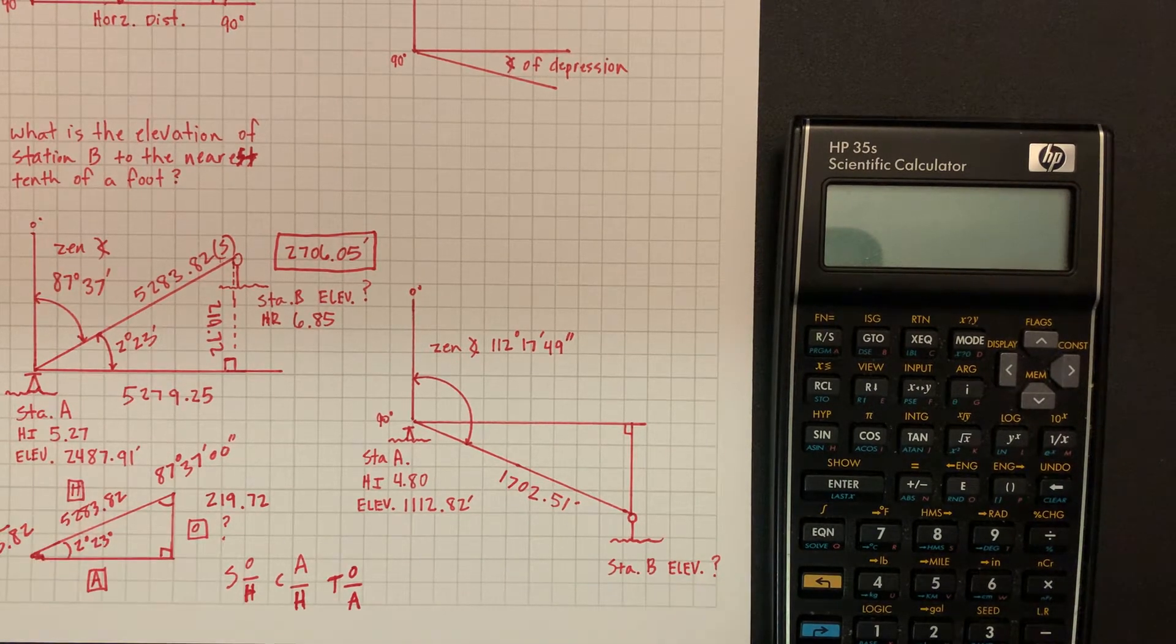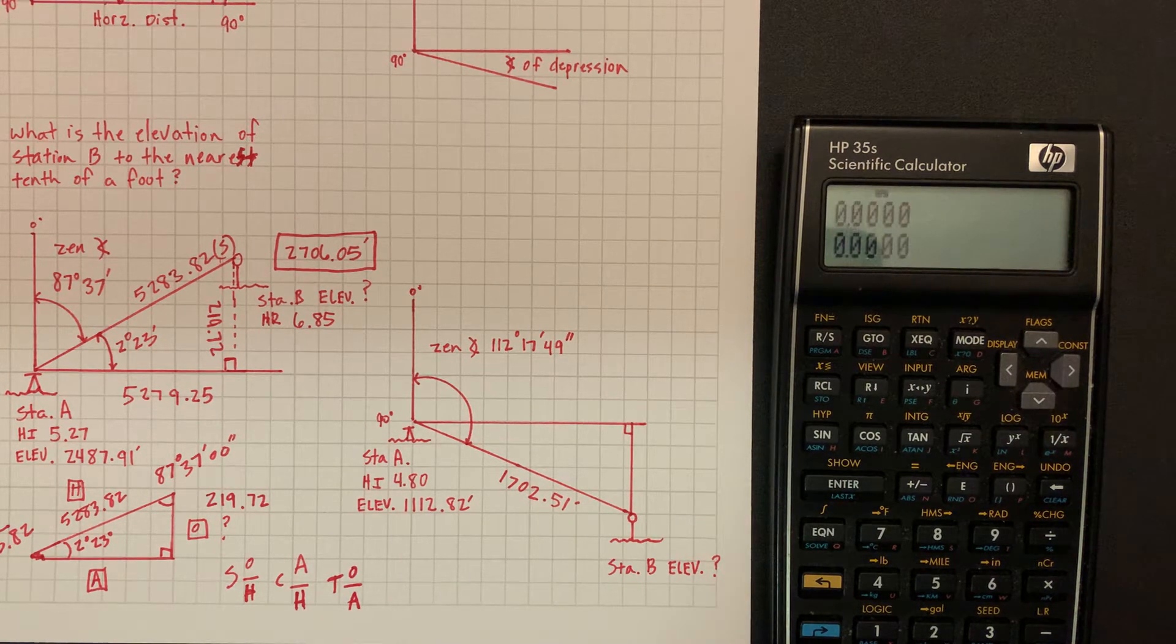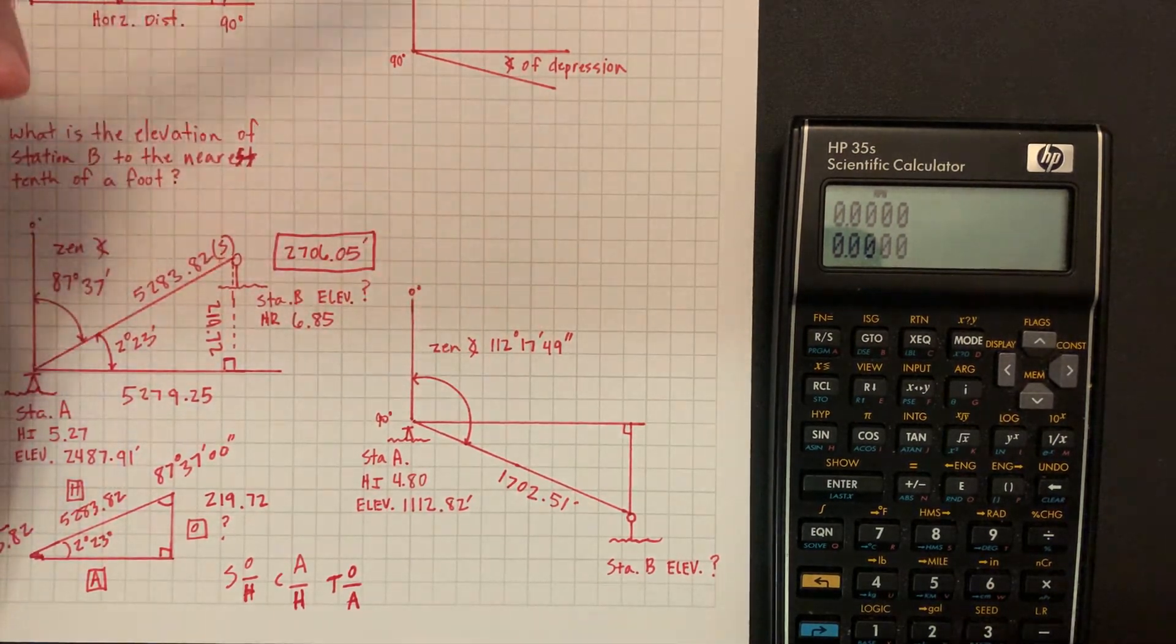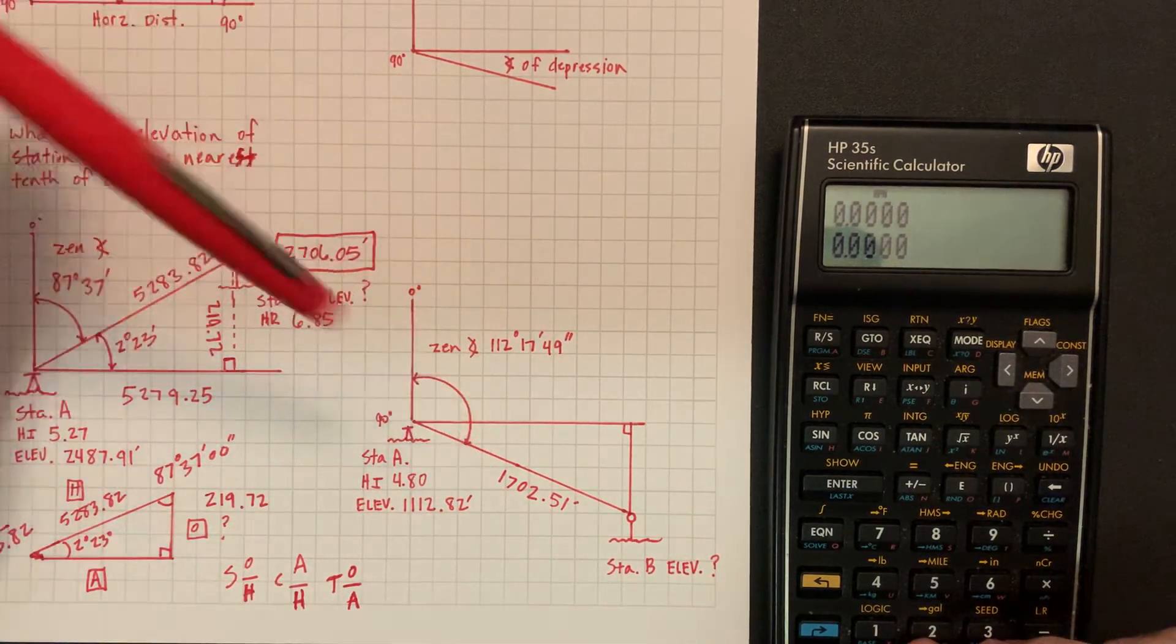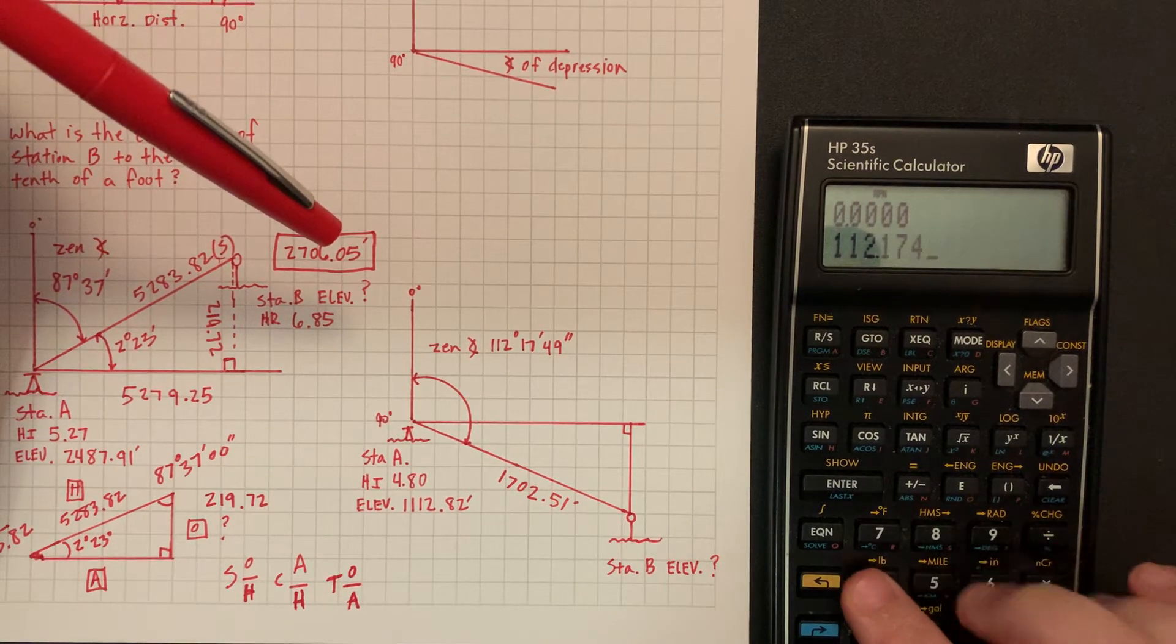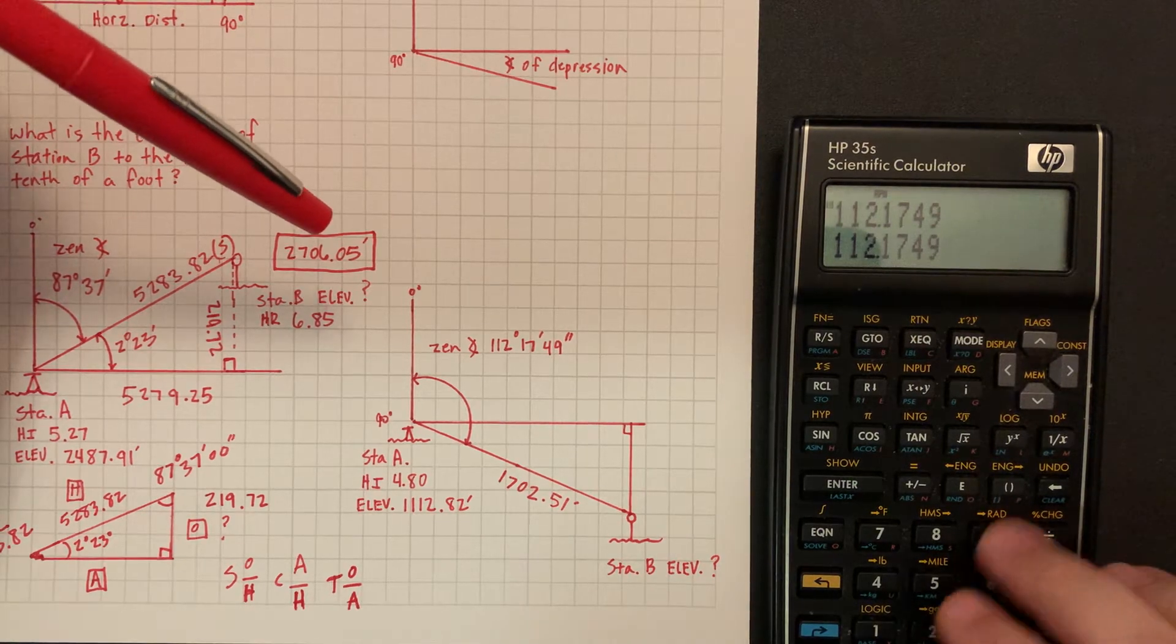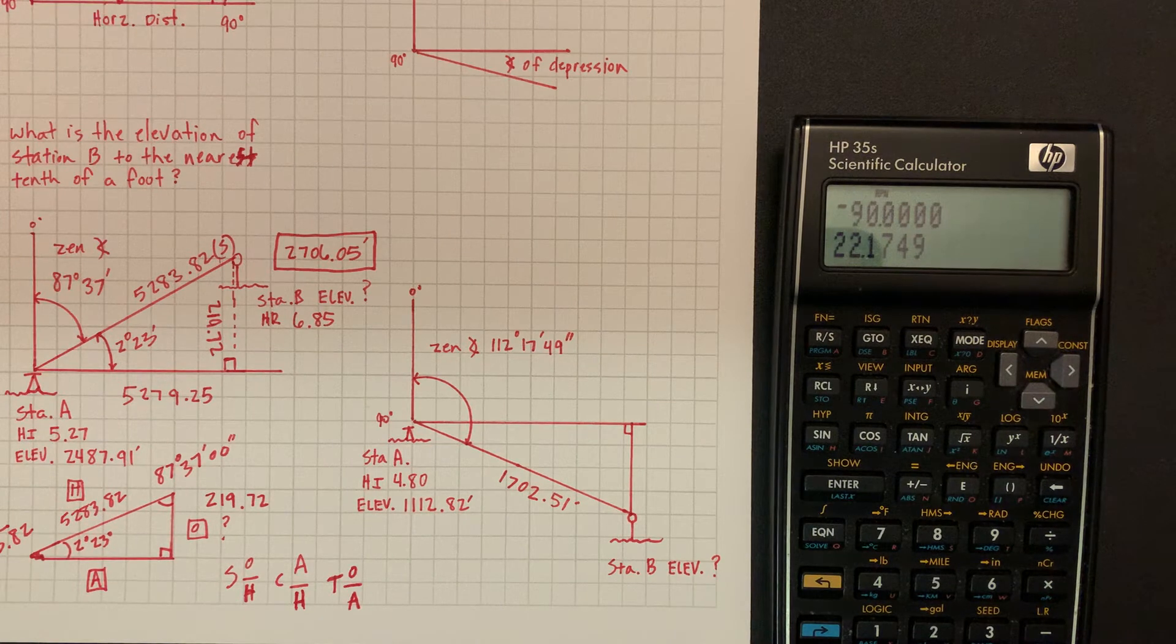Hello, okay so we'll do the angle of depression problem real quick. We have our zenith angle is 112°17'49", so we need to subtract that from 90 to get our vertical angle. So 112.1749 and 90 minus, so we got our angle 22°17'49".